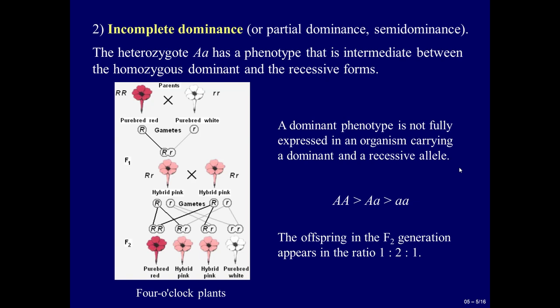The second type is incomplete dominance, also called partial dominance or semi-dominance. The heterozygote (big A, small a) has a phenotype intermediate between the homozygote dominant and recessive forms. Homozygote organisms (big R, big R) have red flowers; recessive homozygotes have white flowers; but heterozygotes have an intermediate pink color. A dominant phenotype is not fully expressed in an organism carrying both a dominant and recessive allele. The formula is: big A big A > big A small a > small a small a. The F2 ratio is 1 to 2 to 1, the same as the genotype ratio.